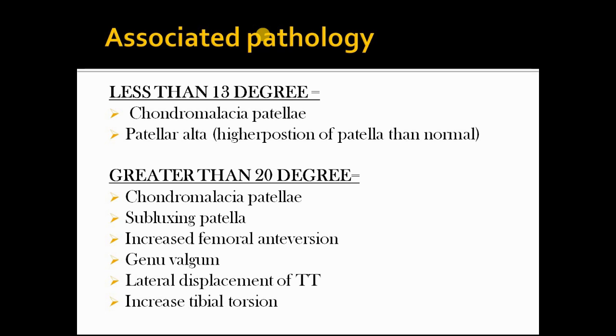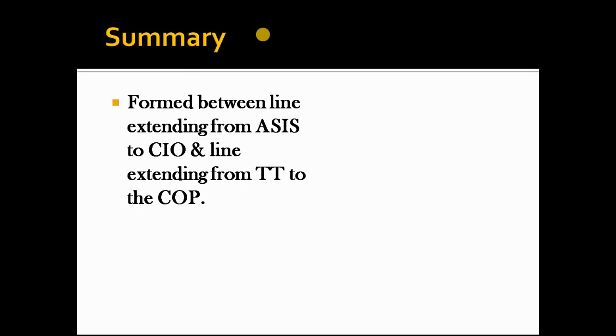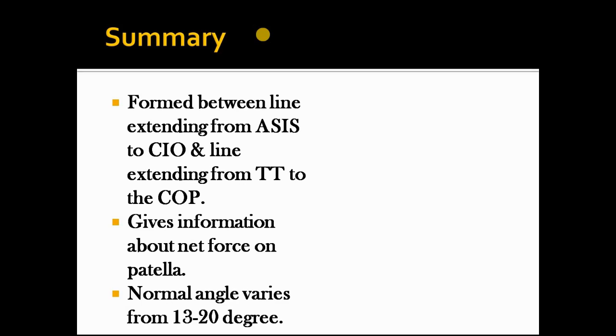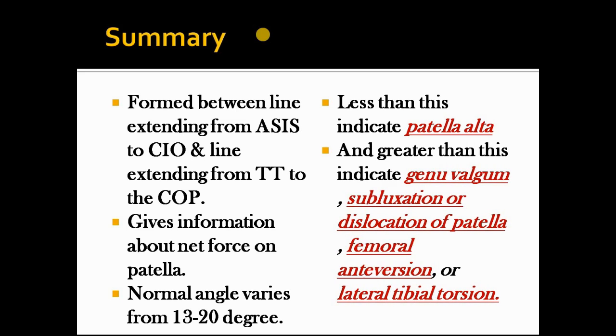I hope you understand the whole topic, but let's revise very quickly. The Q-angle is mainly formed between the line extending from ASIS to the center of patella and the line from tibial tuberosity to the center of patella. It gives us information about net force on the patella. Normal Q-angle varies from 13 to 20 degrees. Less than this indicates patella alta, and greater than 20 degrees indicates genu valgum and subluxation or dislocation of the patella, femoral anteversion, or lateral tibial torsion.